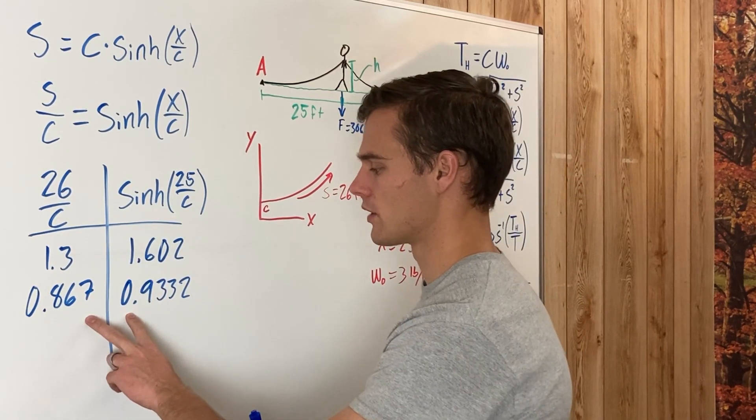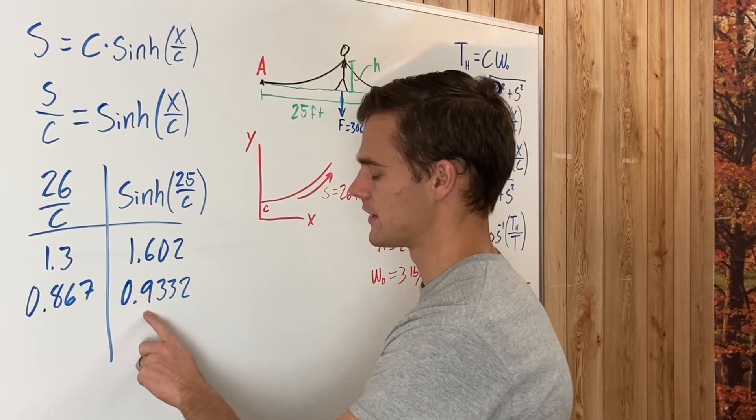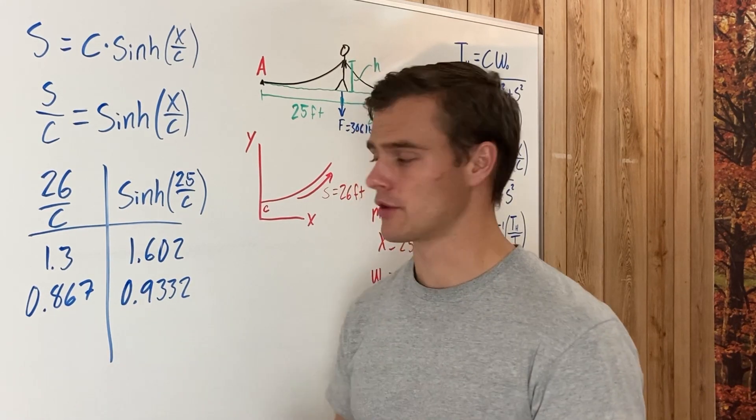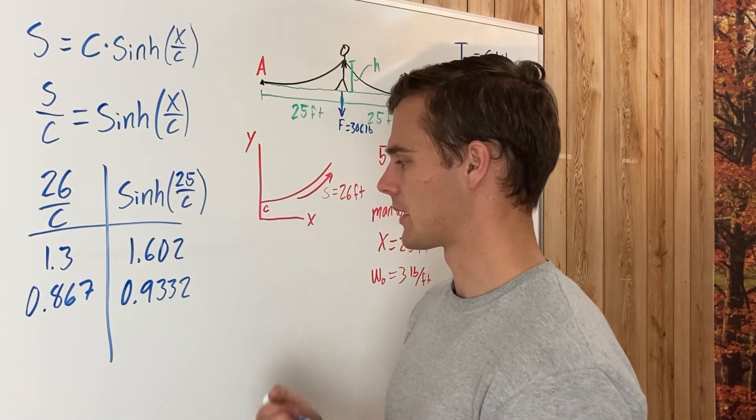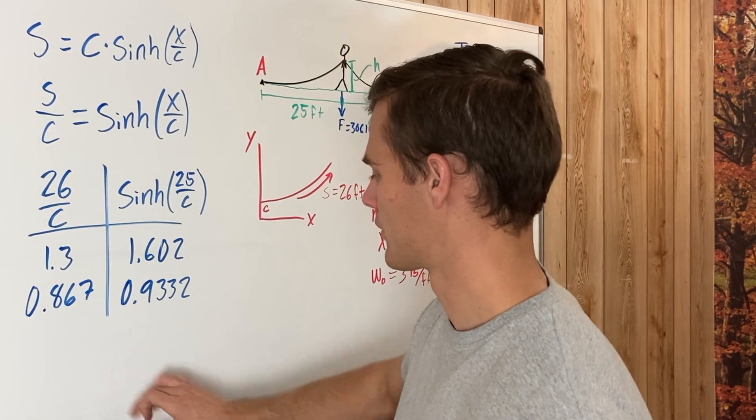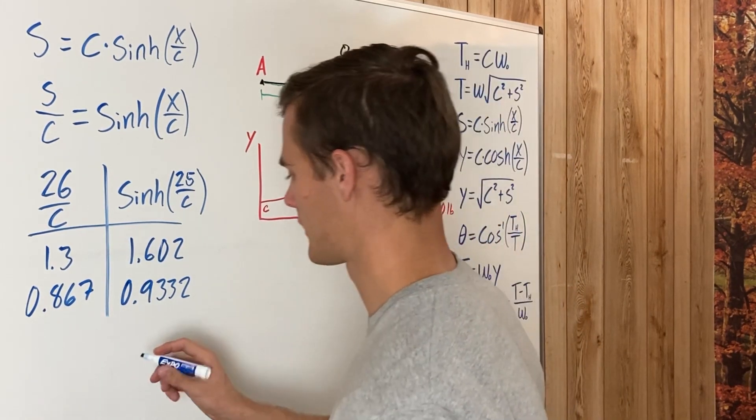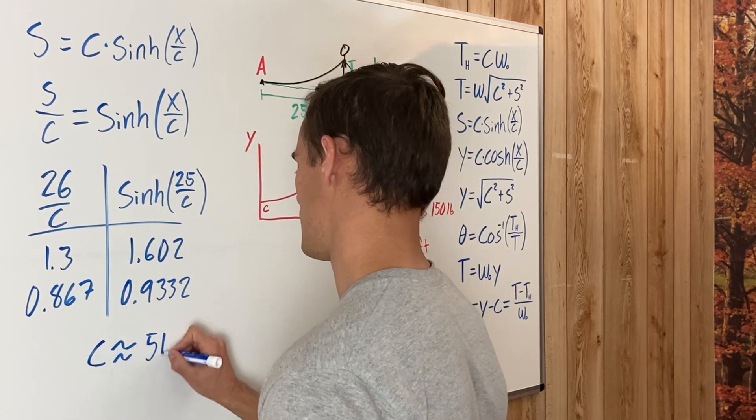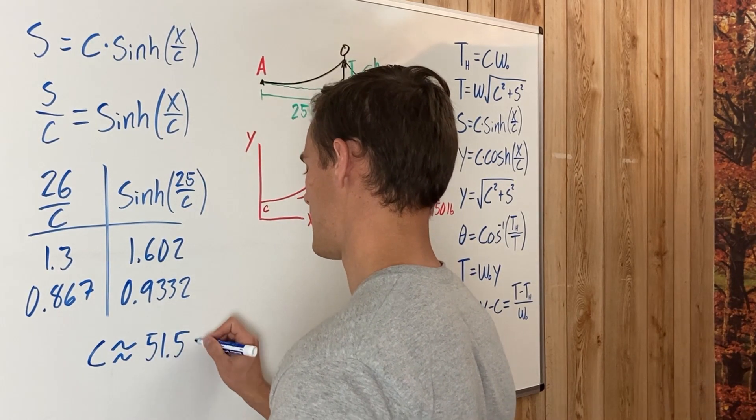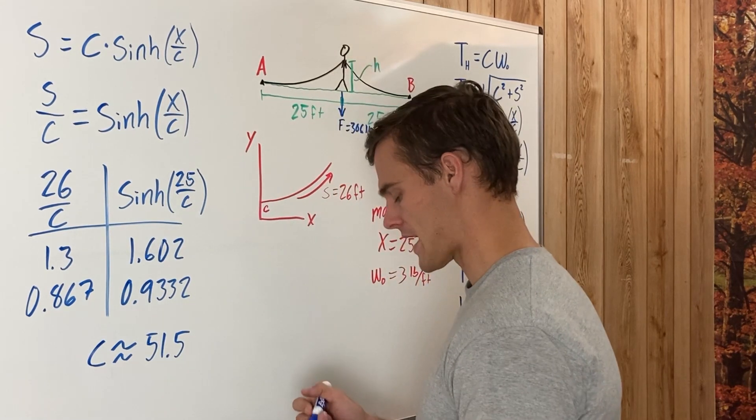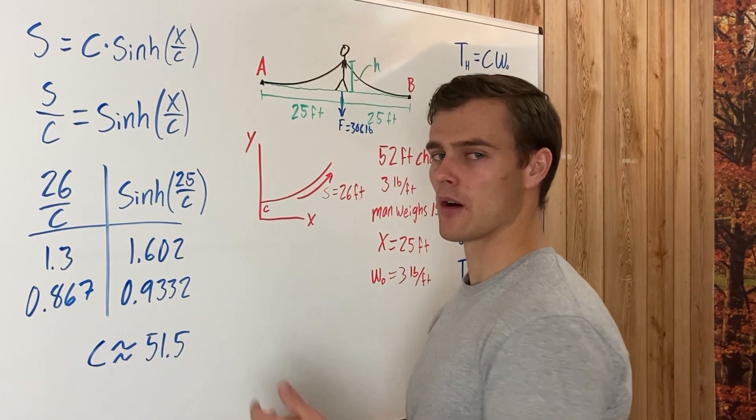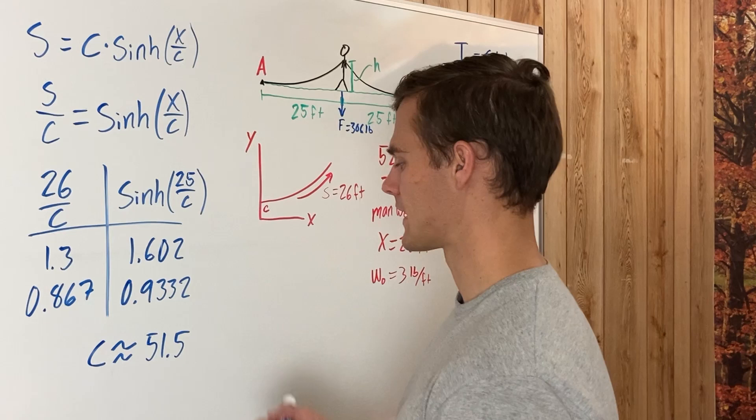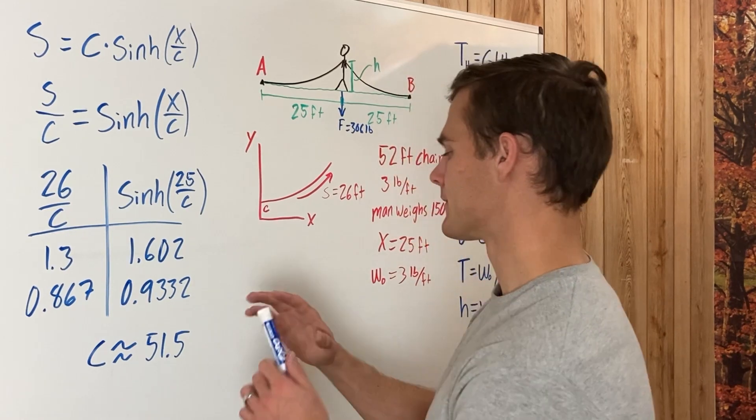Because it kept going that way, that means we're going in the right direction. C is going to be bigger than 30, so we'll just keep plugging in values for C and getting us closer and closer. Once this side is greater than this side, then we know we've gone too far and you'll need to back up a little bit. I'm not going to go through the whole process in this video. I end up getting that C is about 51.5. I would match these decimal places to about four or five decimal places to get accurate enough.